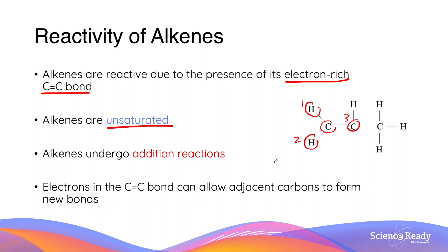As such, alkenes can undergo addition reactions where electrons in the double bond can allow adjacent carbon atoms to form two new covalent bonds. This way the molecule becomes saturated.